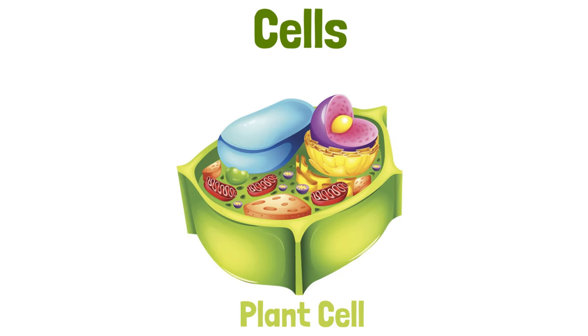Plant cells are very much like animal cells. They also contain organelles, such as the nucleus, cell membrane, cytoplasm, vacuoles, and mitochondria.